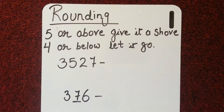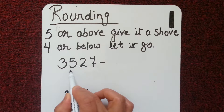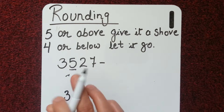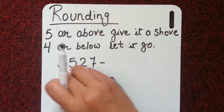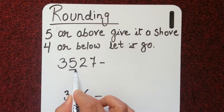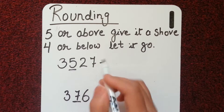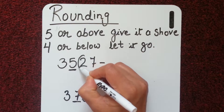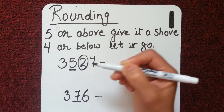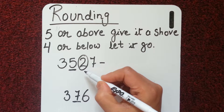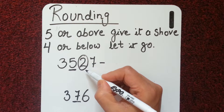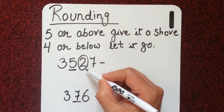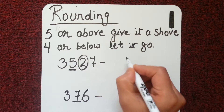Suppose we have the number 3527 and we want to round this number to the hundreds place. The number on the hundreds place is five. What we do is look at the number on the right-hand side of the hundreds place, which is two. Two falls in the phrase 'four or below, let it go' because two is below four.